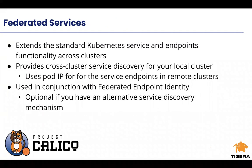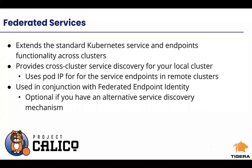Federated services extend the standard Kubernetes service and endpoints functionality across clusters, enabling cross-cluster service discovery for your local cluster. When that happens, it uses the pod IP for service endpoints inside the remote clusters. If you do kubectl get endpoints with a service name, you're only going to see pod IPs from one cluster. Calico Enterprise federated services allow that to span multiple clusters — you see the routable pod IPs not just for a single cluster but for all clusters in your federation. This is used in conjunction with federated endpoint identity, and it's optional if you have an alternative service discovery like Consul.